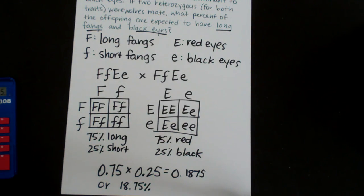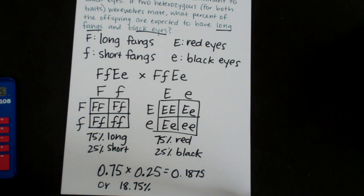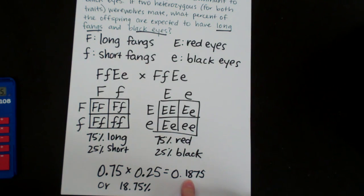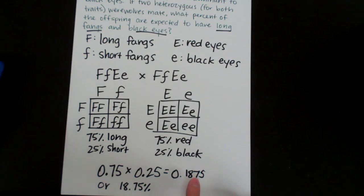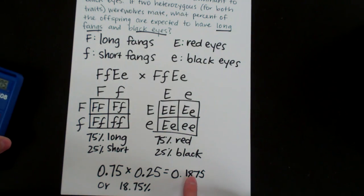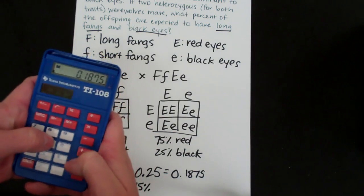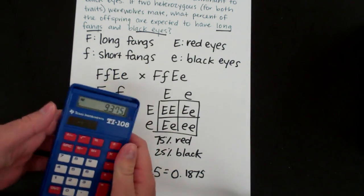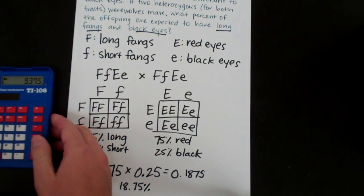So let's say the problem said they had 50 babies. So of those 50 babies what percent would have long fangs and black eyes? That would be 18.75. And how many would have long fangs and black eyes? That would be 0.1875 times 50. So that would be 9.375 offspring.